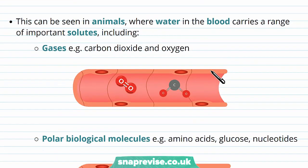We can see this in animals for specific substances, where water in the blood carries a range of important solutes. For example, gases like carbon dioxide and oxygen. Carbon dioxide and oxygen can be surrounded by water as well and transported through the blood, where oxygen goes towards tissues needed for respiration, and where CO2 is a side product from that respiration, which needs to be taken away.